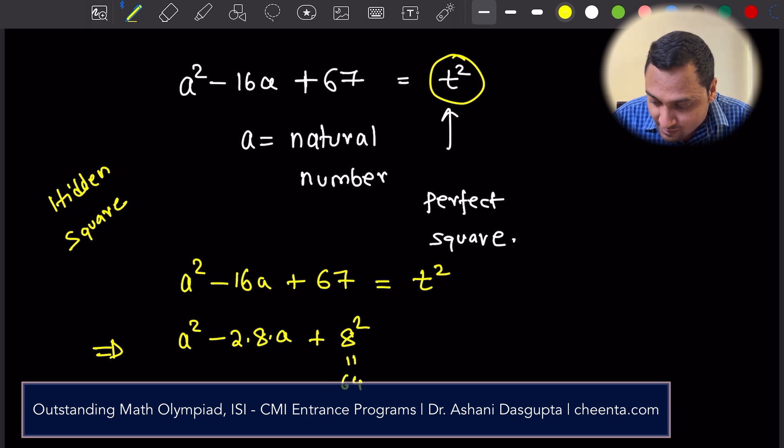I can write a square minus 2 times 8 times a plus 8 square, which is 64, plus 3. I am just rewriting 67 as 64 plus 3. This is equal to t square.